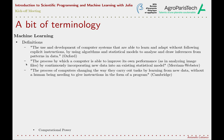For Merriam-Webster, machine learning is the process by which a computer is able to improve its own performance by continuously incorporating new data into an existing statistical model. This is essentially the same concept given by the Cambridge Dictionary: the process of computers changing the way they carry out tasks by learning from new data, without a human being needing to give instructions in the form of a program. Again, the key is that we do not need to explicitly program a machine learning algorithm — the algorithm must learn from the data.